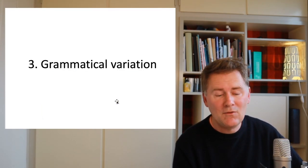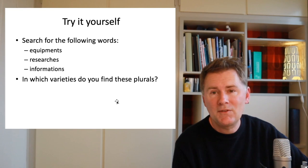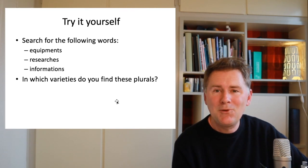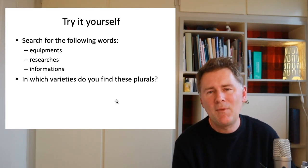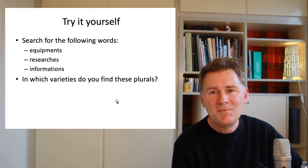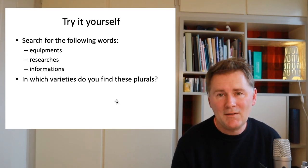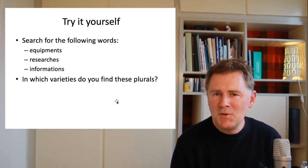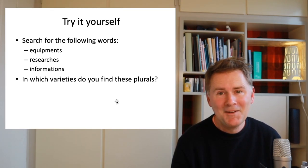I want to look at some cases of grammatical variation. The phenomenon we're looking at is mass nouns with a plural ending. Mass nouns have the grammatical characteristic in British and American English that they don't pluralize, at least not very regularly. But this is handled differently across different varieties of English. I'd like you to find out how this works — search for the words 'equipments,' 'researches,' and 'informations.'